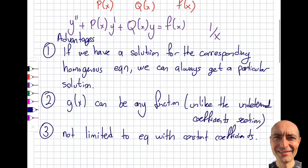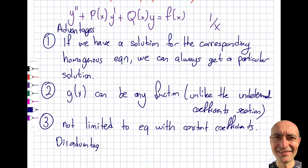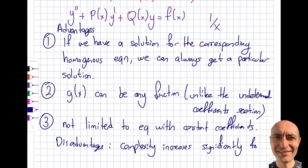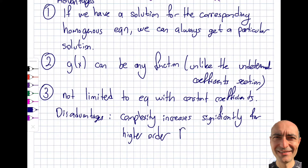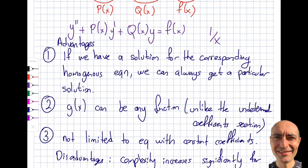Now for the disadvantages: complexity increases significantly for higher orders. As I increase the order of the equation, I get much more complex things to deal with. You'll see matrices shortly — for a fifth order equation you'd have to solve a five-by-five matrix and get its determinant. Additionally, every single time I will need to compute an integral, and depending on the form of F(x), I may not be able to obtain that integral analytically.